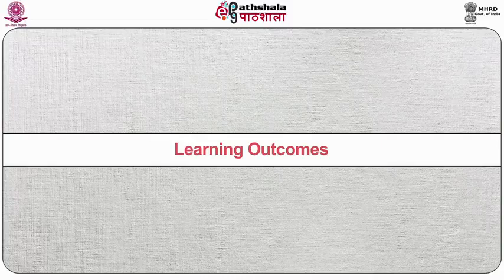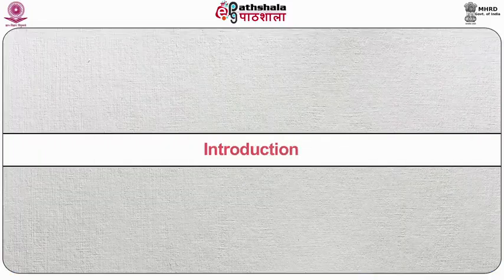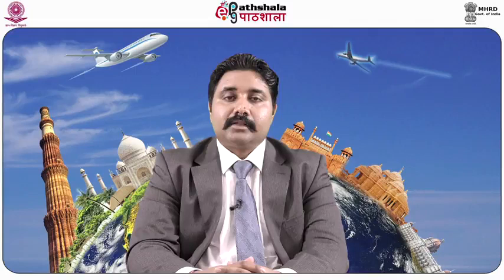The learning objectives of this module are to learn what is meat, basic constituents which build up the meat, meat slaughtering procedure which includes inspection and methods of stunning, cuts of meat along with cooking methods applicable on it and its storage. Topics covered include: Introduction to Meats, Muscle Fiber, Fat, Inspection and Grading of Meat, Slaughtering Procedure, Methods of Stunning, Aging of Meat, Selection of Meat for Kitchen Operations, Factors which make meat tender, Methods of Cooking, Storage of Meat, and Cuts of Beef, Pork and Lamb.